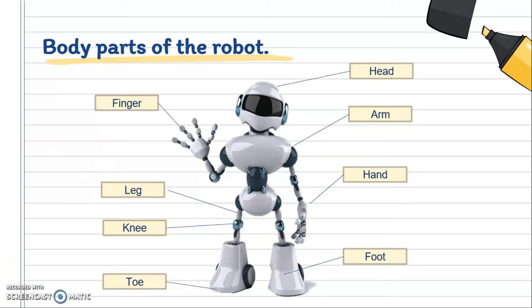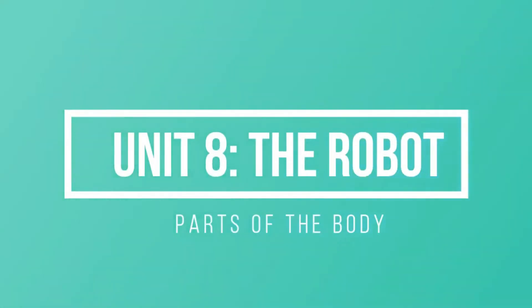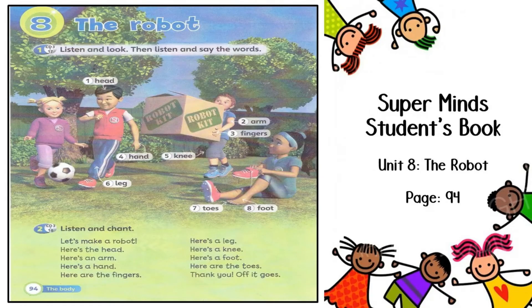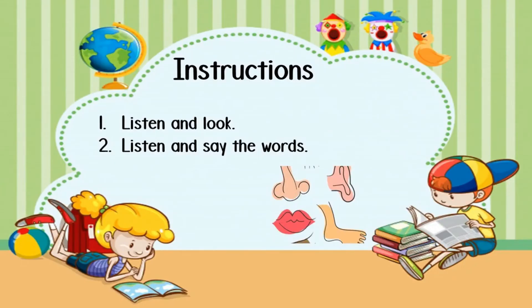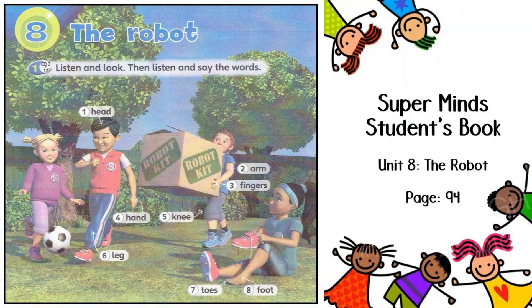We are done with the body parts of the robots. I'm sure you can recognize, identify, and name the body parts of the robots. Now I would like to ask you to open page 74 in your Supermind student books to listen and chant together. Unit 8: The Robot. Student's Book page 94. Activity 1: Listen and look, then listen and say the words.